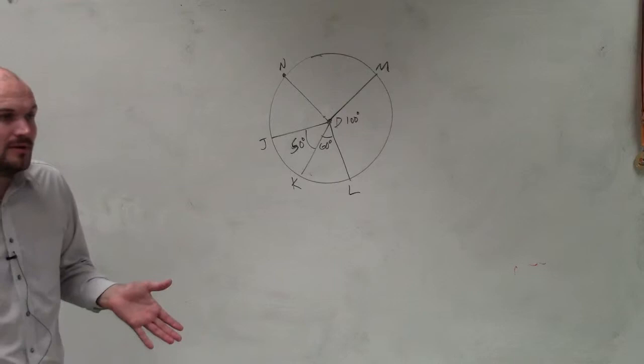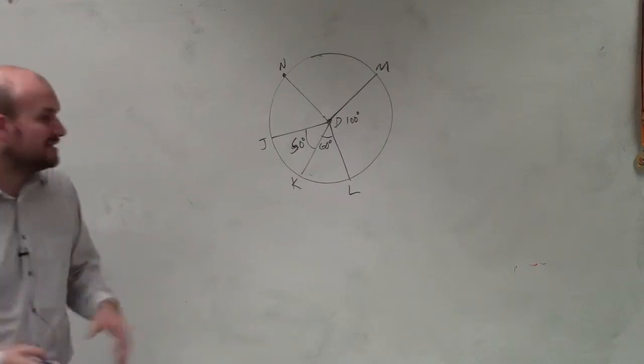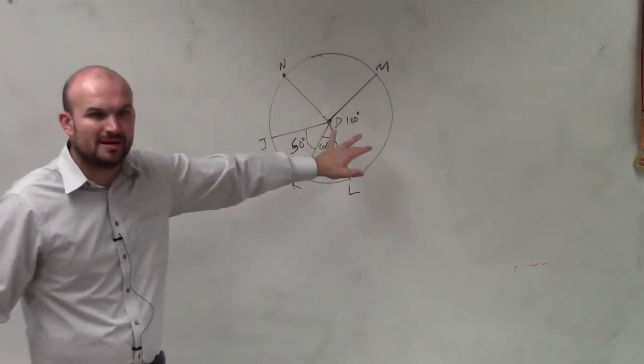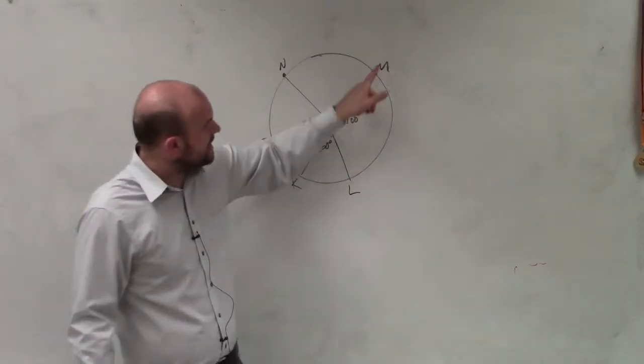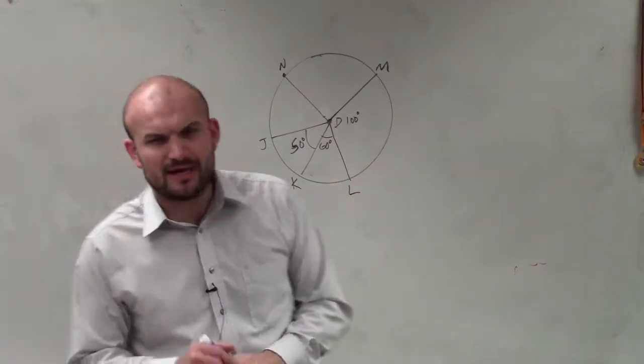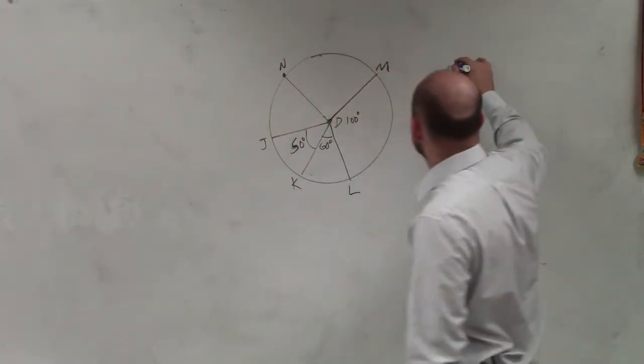But now, what they're asking us to do is find actually the length, the distance from one endpoint to the next. They're not asking for what the angle measure is. For number 19, what are they asking for? The length of what?